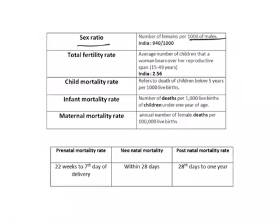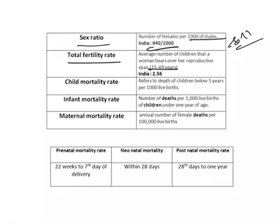Sex ratio is a valuable source for finding the population of women in India and the ratio of women to men. According to the 2011 census, it is 940 females per thousand males. The next term is total fertility rate — it is the average number of children a woman can bear over her reproductive span of 15 to 49 years. According to the 2011 census, it is 2.56 in India.